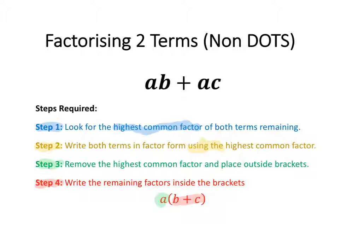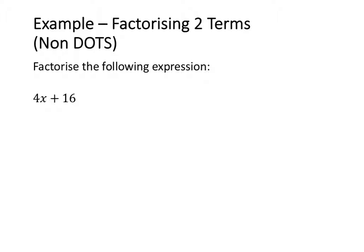So let's have a look at some examples. In the first example, we're going to factorise 4x plus 16. I want to look for the highest common factor between 4x and 16. The highest common factor between 4x and 16 is going to be 4.